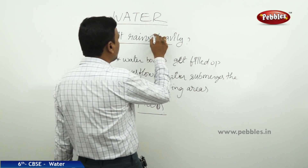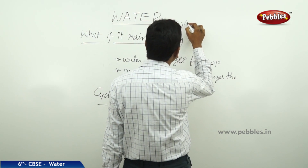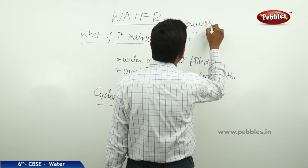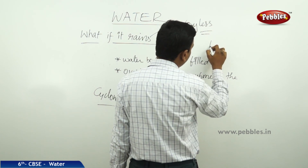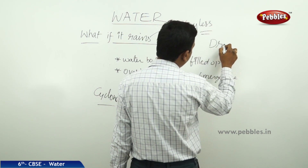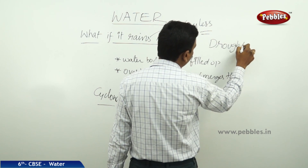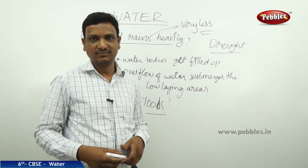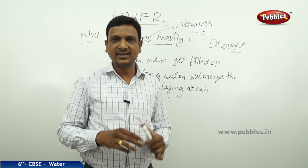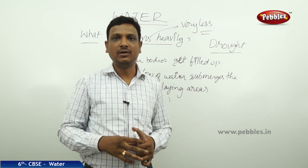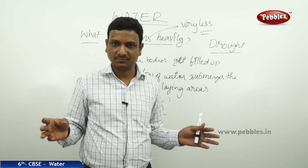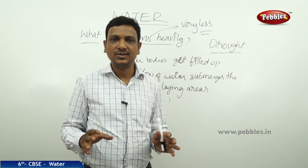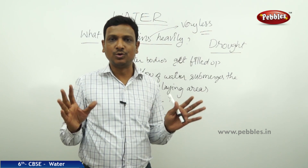There is one more question: what if it rains very less? You call it drought. Drought is the condition where there is less rainfall, causing a scarcity of water. The groundwater is completely used up, so there is no more groundwater.